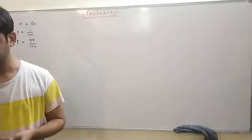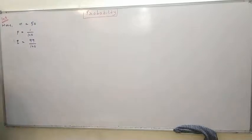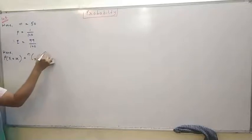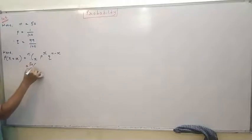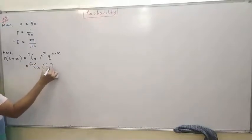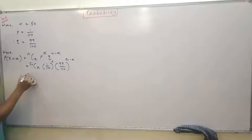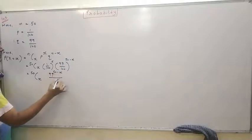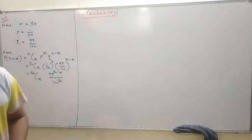The question asks: he will get at least one prize, exactly one prize, and at least two prizes. First we make a formula for the probability distribution. P(x) equals nCx times p raised to x times q raised to n minus x. That is 50Cx times (1/100) raised to x times (99/100) raised to 50 minus x. That is the probability distribution for this problem.